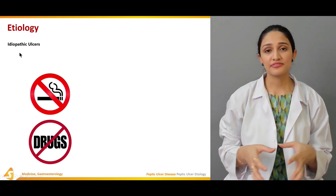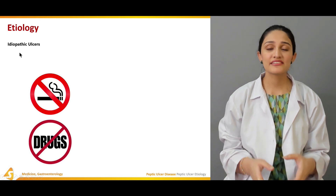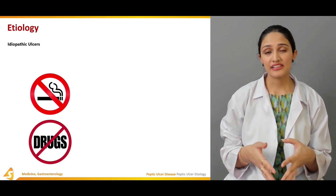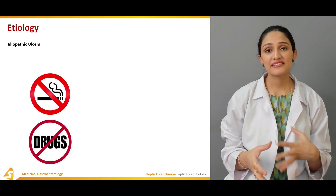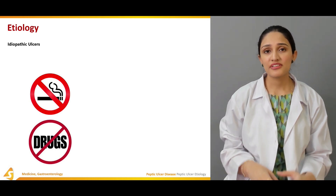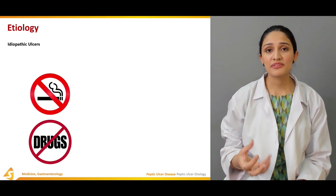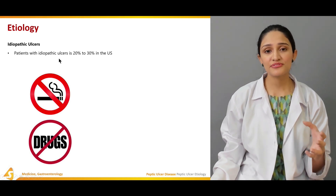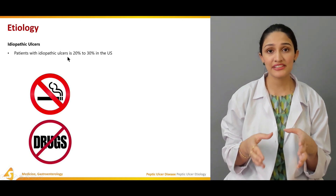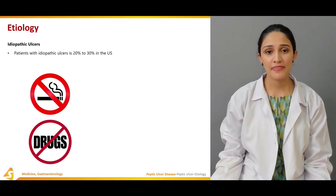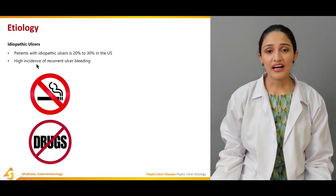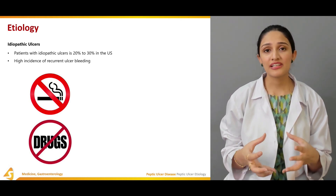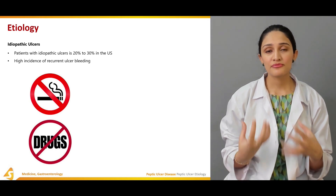The third type is idiopathic ulcers, which are slightly increasing. These are Helicobacter pylori-negative and NSAIDs-negative ulcers, meaning they are not caused by infection or ingestion of these medicines. Patients with idiopathic ulcers constitute around 20 to 30% in the US. This type of ulcer has a high incidence of recurrent ulcer bleeding and is more prone to develop gastrointestinal bleeding.